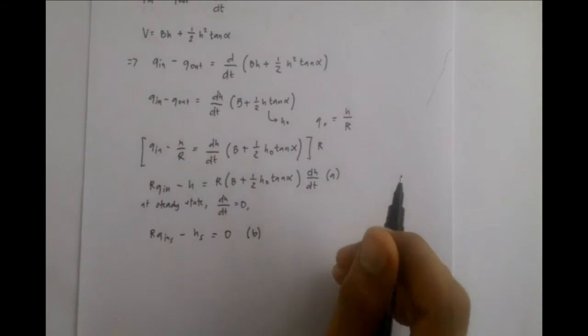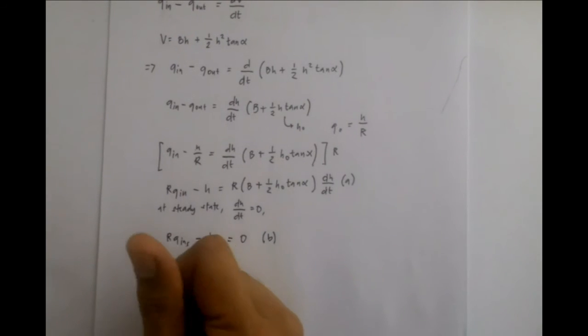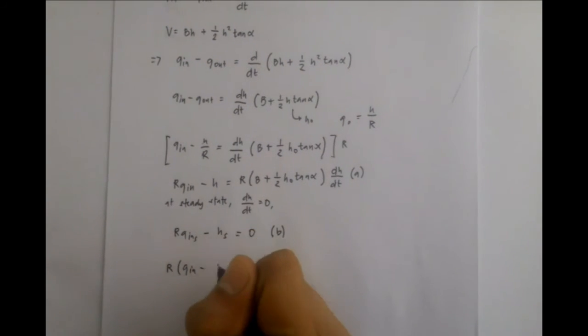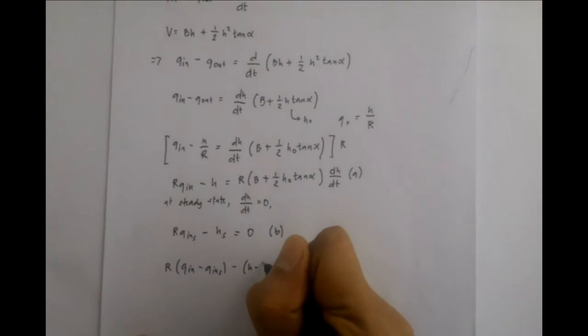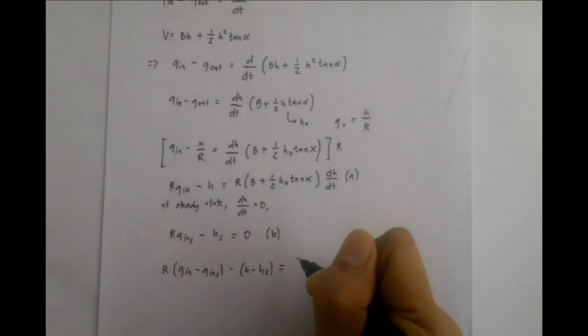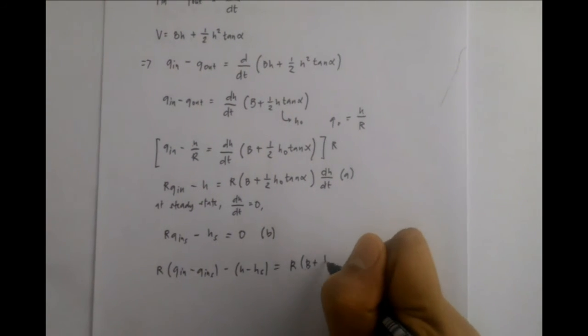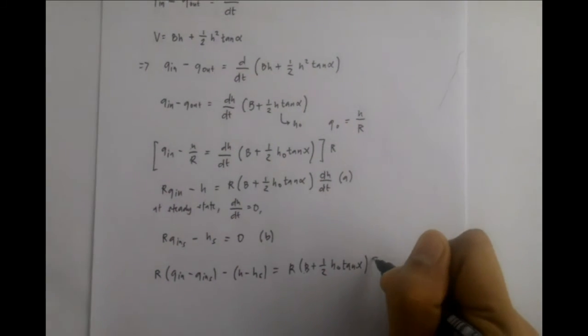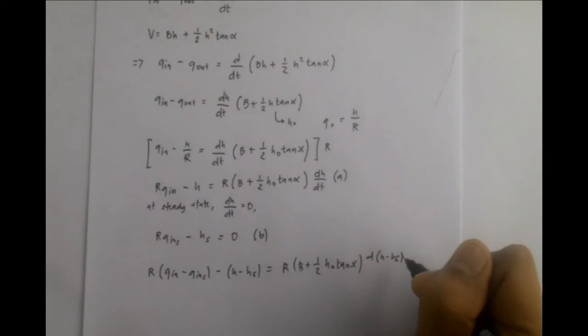Subtracting B from A, we will get R times Q_in minus Q_in sub-s minus H sub-s equals R times B plus one-half H sub-zero tangent alpha times d(H minus H sub-s)/dt.